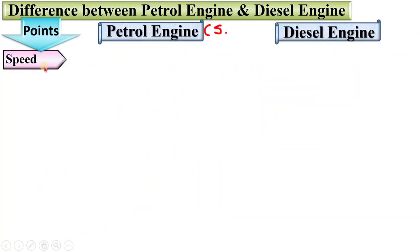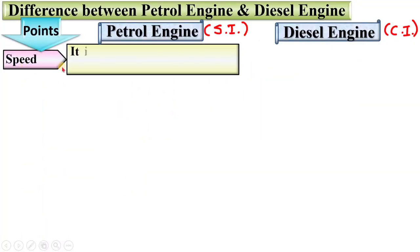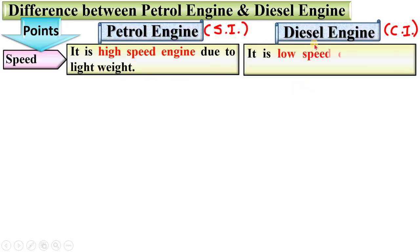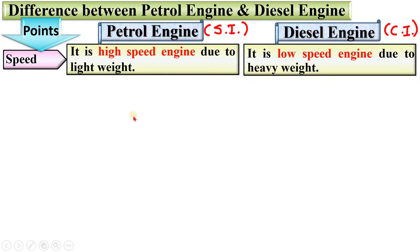Next point, speed. Petrol engine is a high speed engine due to its light weight. Whereas in case of diesel engine, it is a low speed engine due to the heavy weight.